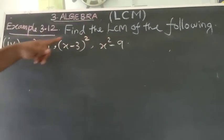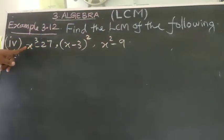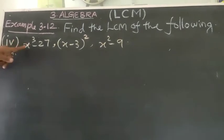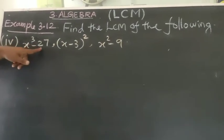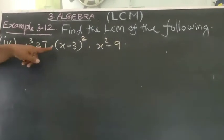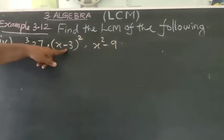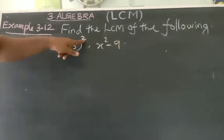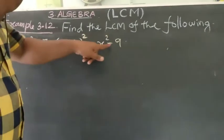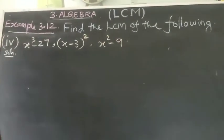Find the LCM of the following — fourth question: X cubed minus 27, X minus 3 whole squared, X squared minus 9.